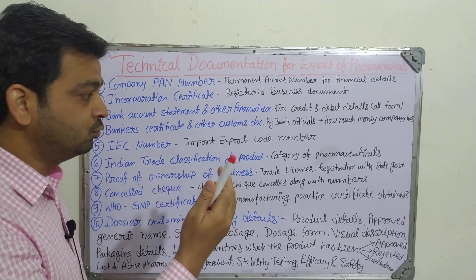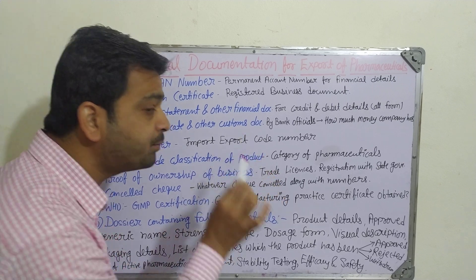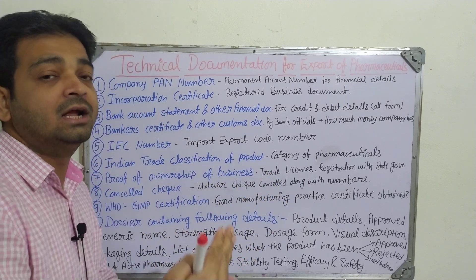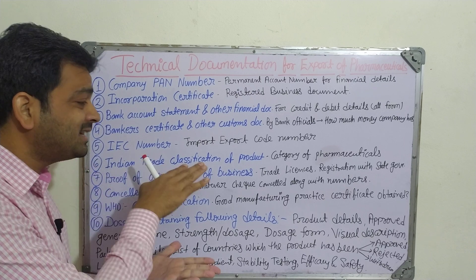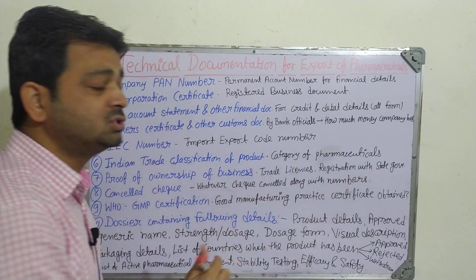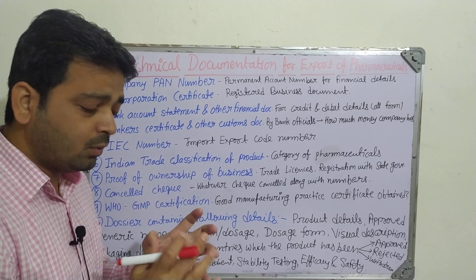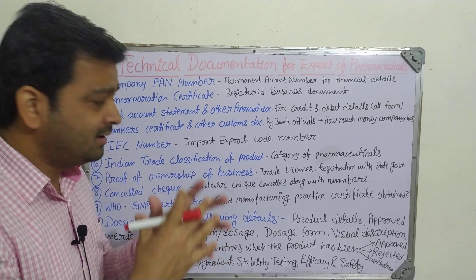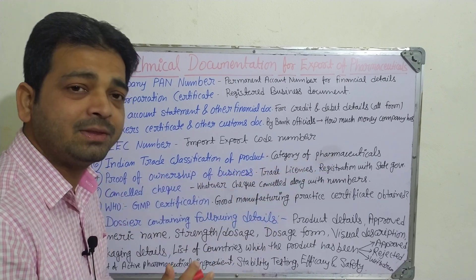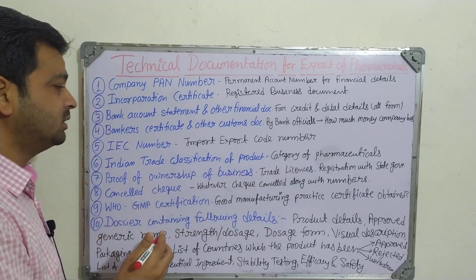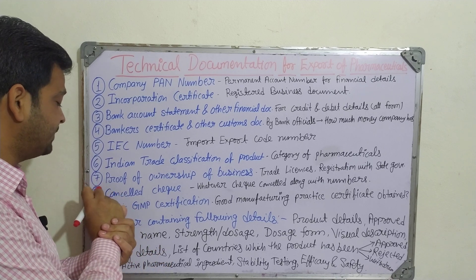The sixth one is the Indian Trade Classification of the product you want to sell outside the country. What is the trade classification category — whether pharmaceutical solid dosage forms, liquid dosage forms, anti-diabetic, anti-inflammatory — there is a long list and you need to identify which category your product falls under. That certificate also needs to be attached.